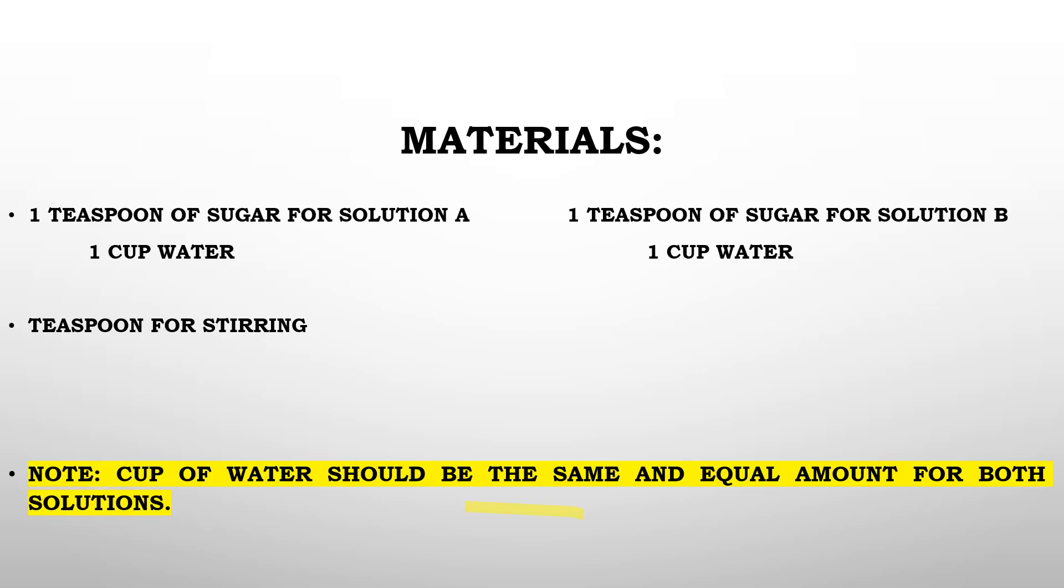Materials needed. You need to prepare two cups. Any cup - you can use a transparent glass or container. Prepare two containers. Then prepare sugar, because you will use it later. Also prepare a teaspoon for stirring. If you don't have a spoon, you can use a stick or anything for mixing.